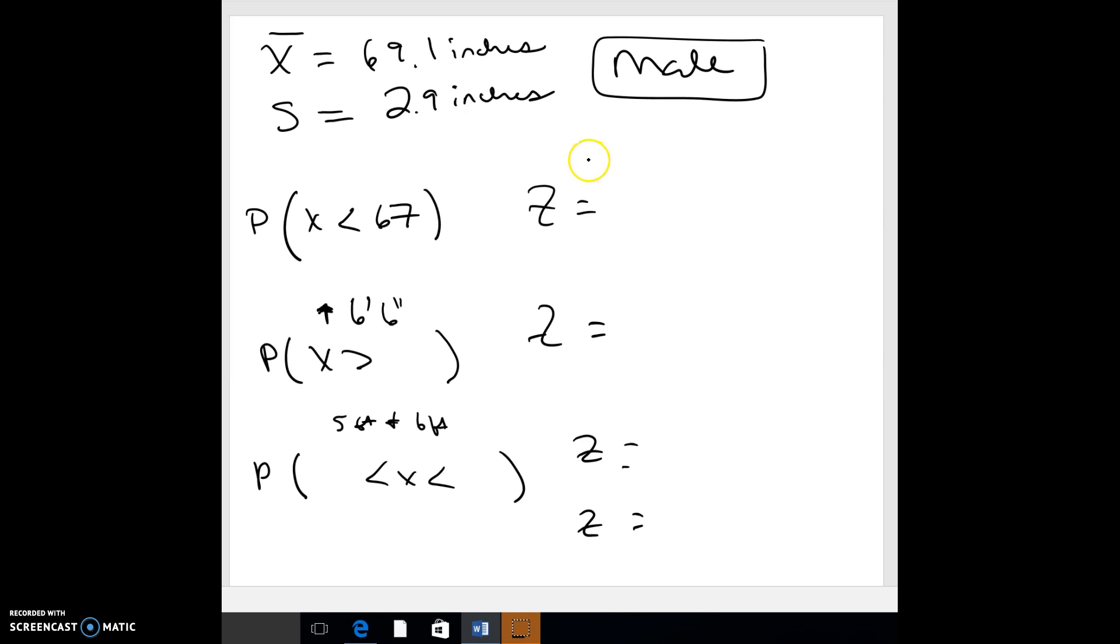So z-score is your data. A z-score is always your data compared to the mean divided by the standard deviation.